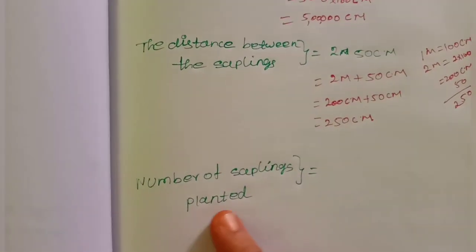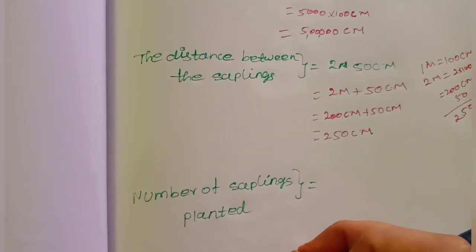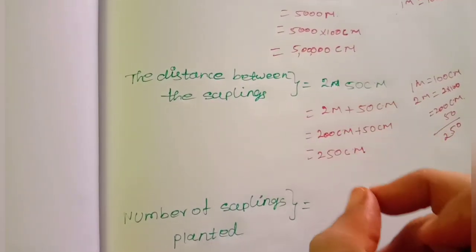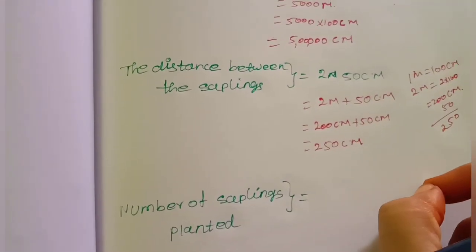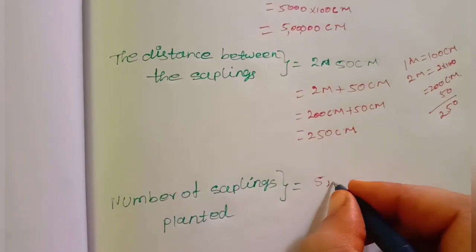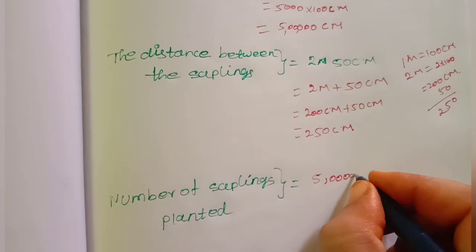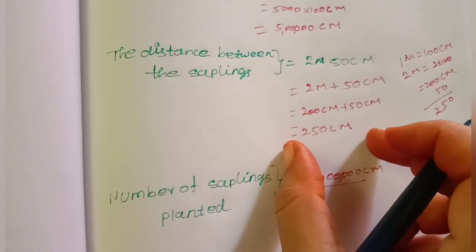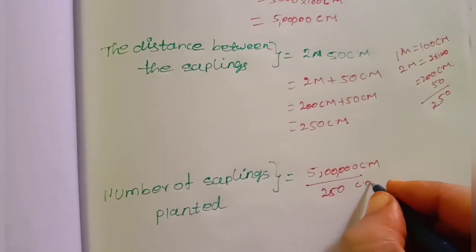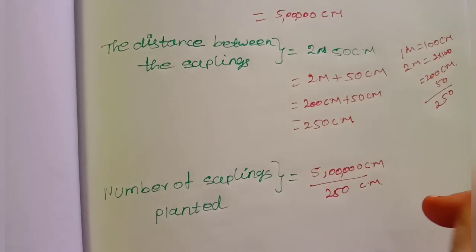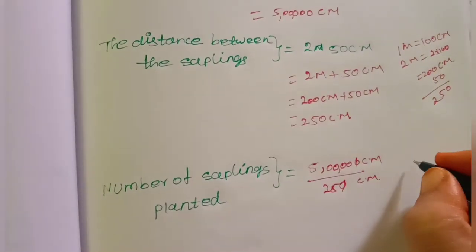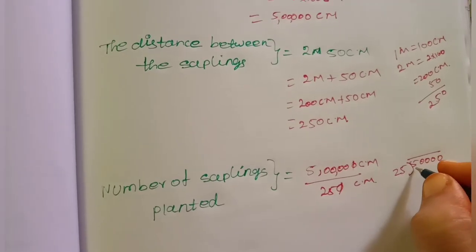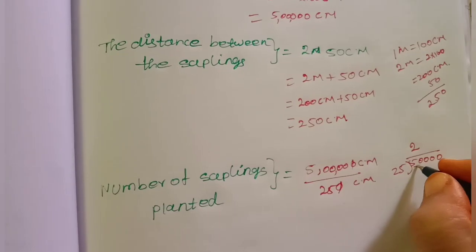Now, the number of saplings planted — how do we write this? Total distance divided by the distance between saplings. We have 500,000 cm divided by 250 cm. We cancel the zeros and divide 500 by 25, which gives us 2000.